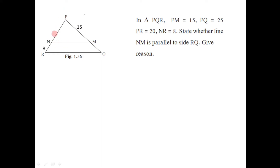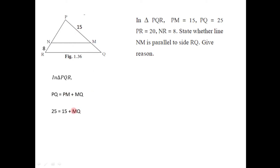To find the lengths of all four segments, consider that in triangle PQR, PQ equals PM plus MQ, since P, M, and Q are collinear points. The length of PQ is given as 25 and PM is 15, so 25 minus 15 equals MQ. Therefore MQ equals 10.